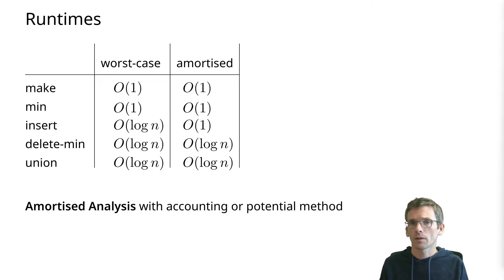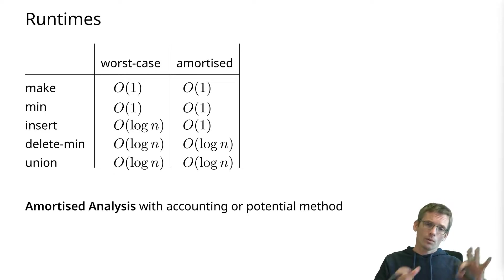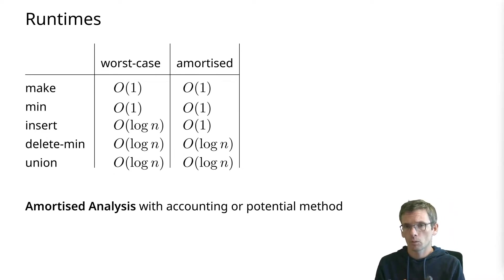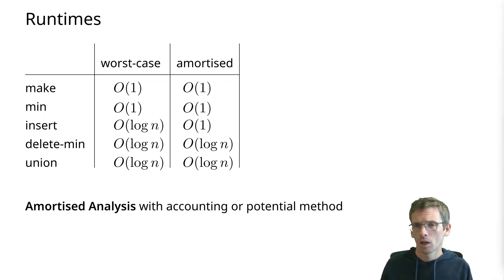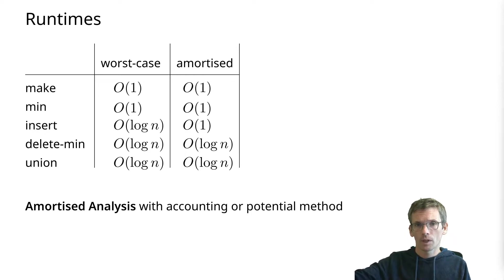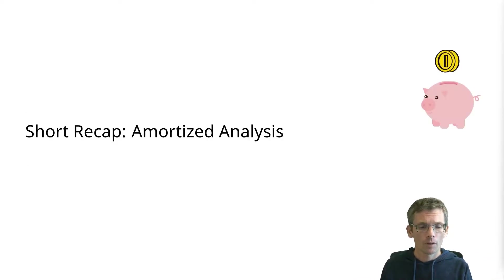We could do the accounting method or the potential method. You definitely need to know what amortized analysis is — if you don't, make sure to watch that video first. I will now do a short recap of the accounting method and the potential method, which mostly makes sense if you already know what they are. You can also skip that recap and directly go to the binomial heaps and their analysis. I will do the analysis with both methods so you can choose or watch both. But first, my short recap.